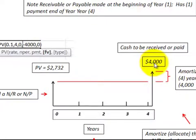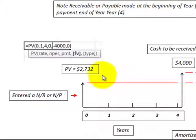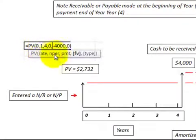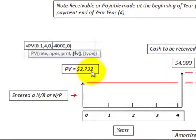We know the amount here that we received or paid at the end of the fourth year — in this case it's $4,000. So we have to discount that $4,000 back to the beginning of year one's value, meaning we need to determine the present value of that $4,000. I used the Excel formula here: a rate of 10%, four periods, and a future value of $4,000 at the end of the period. We come up with a present value of $2,732.